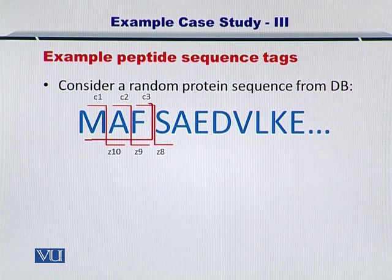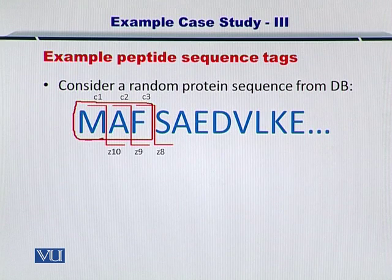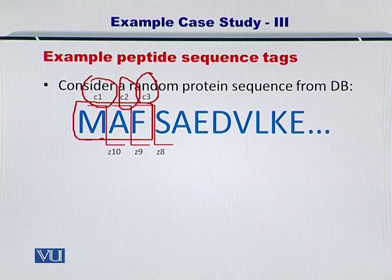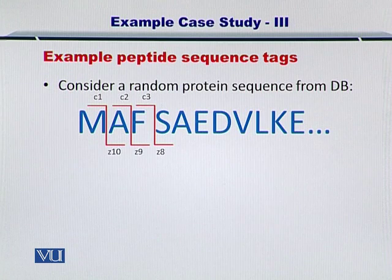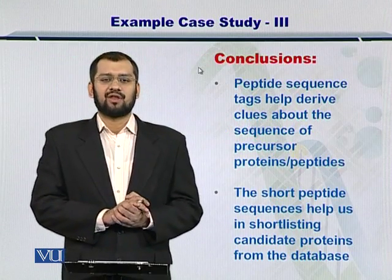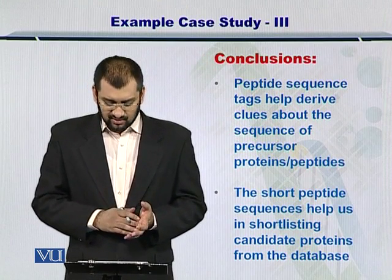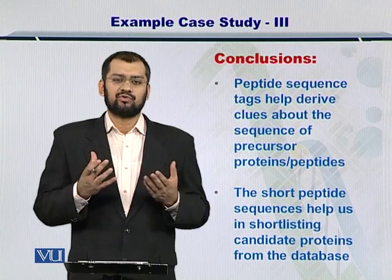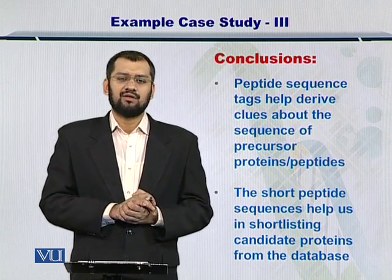M-A-F is the peptide sequence tag that has been formed after exploring the data coming out from these fragments. So in this way, you obtained the peptide sequence tag, and the next step was just to search this peptide sequence tag in the protein or peptide databases. Those proteins or peptides that contained M-A-F will be shortlisted. This will act as a second filtration step after MS1, and the peptide sequence tags will help give clues about the original protein that was in the sample.